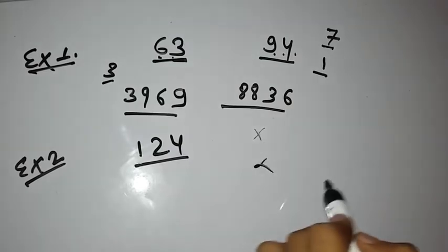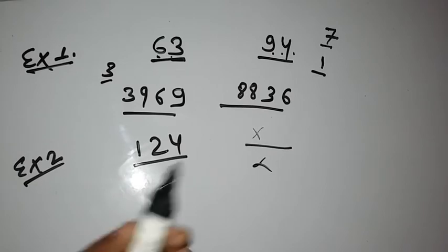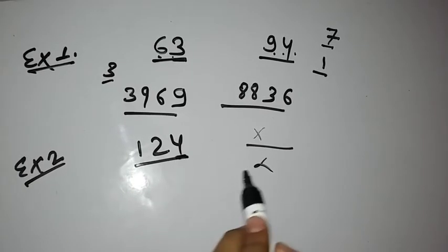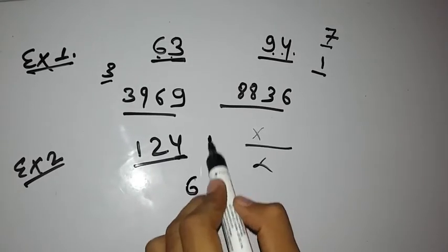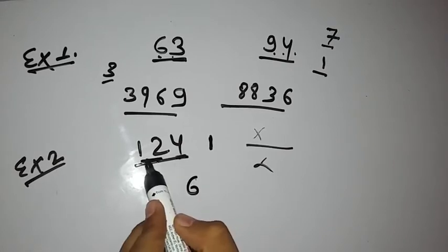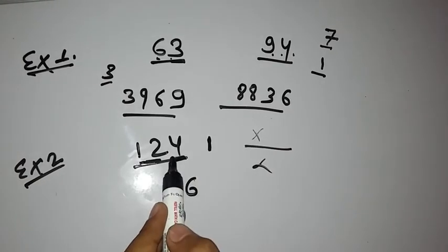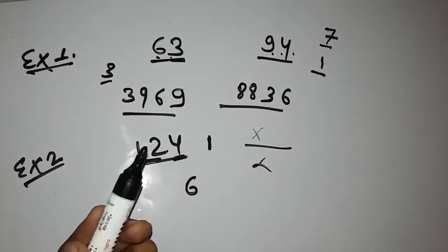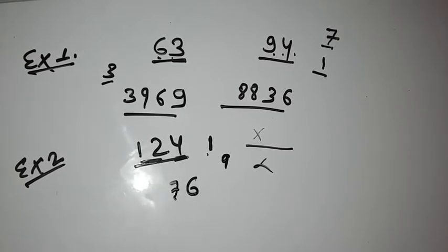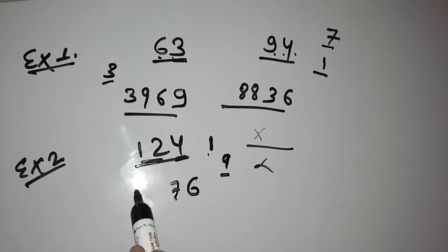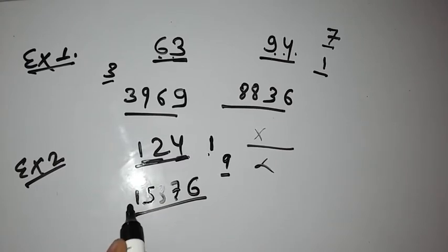Take 124 square. 4 square is 16, write 6 with 1 carry. Then 12 times 4 equals 48, double it to get 96. 96 plus 1 equals 97, write 7 and carry 9. Then 12 square is 144, 144 plus 9 equals 153. So that's the answer, that's the square of 124.